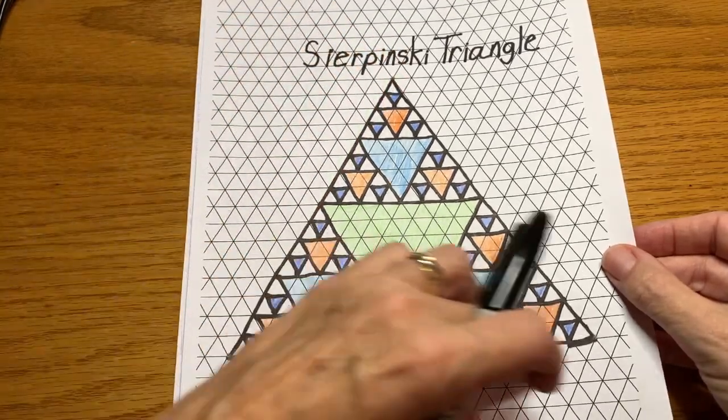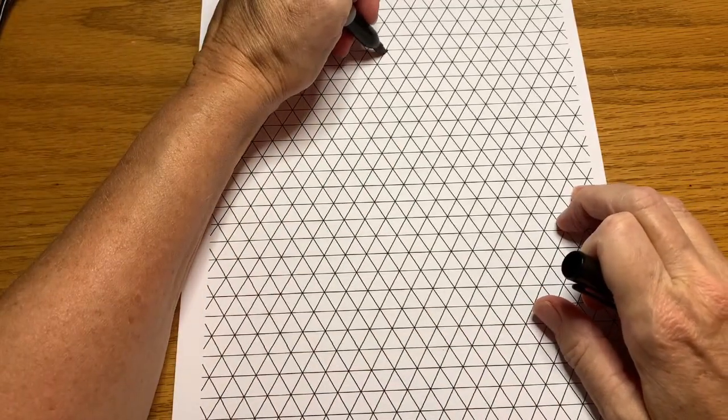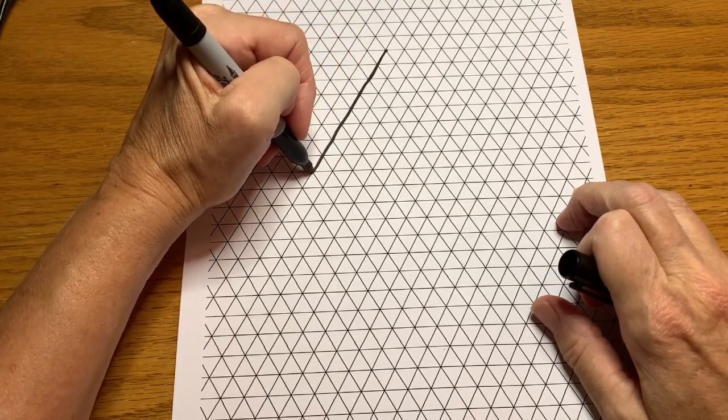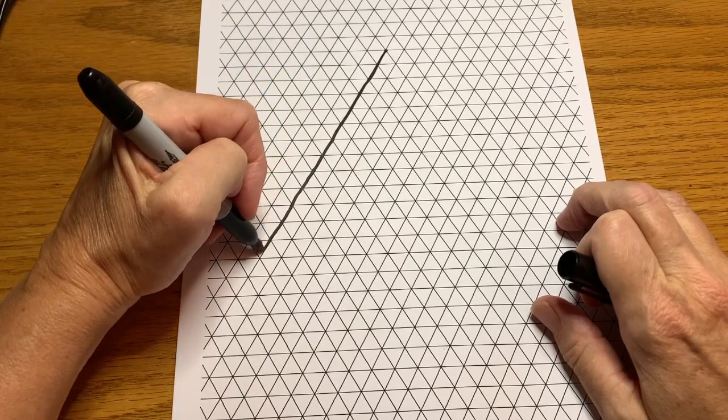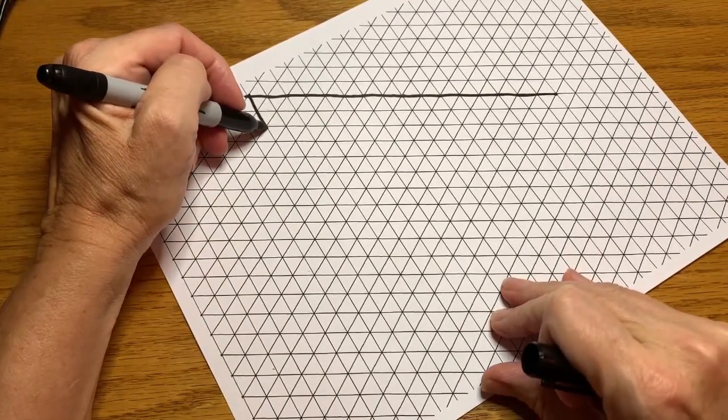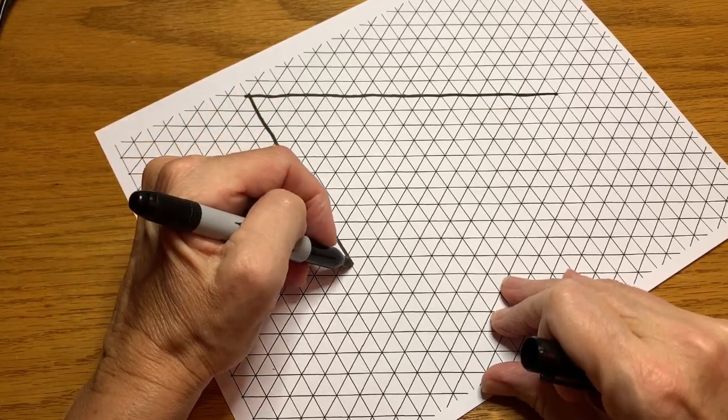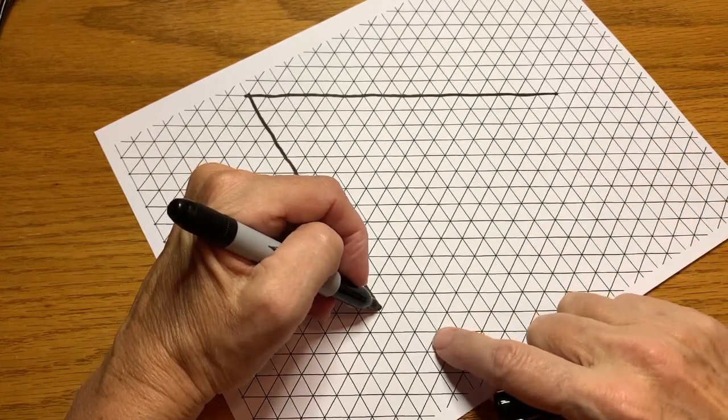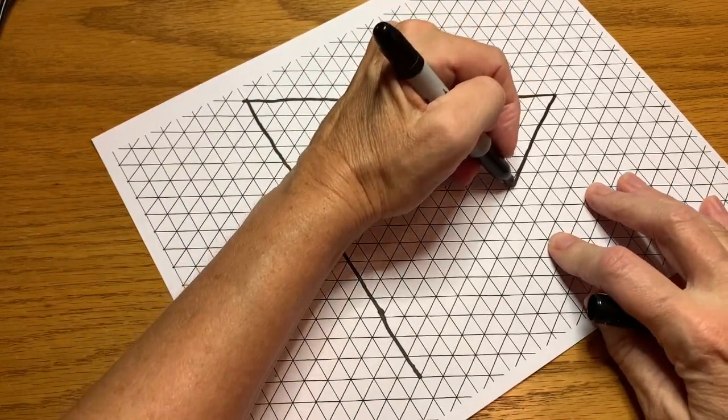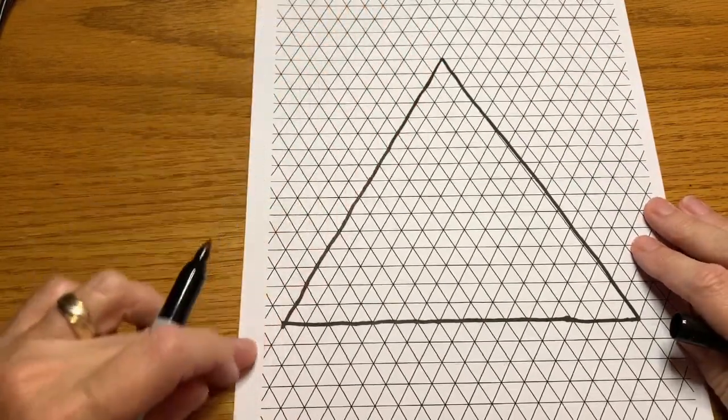I'm going to start with a triangle that has a side length of 16. So if I pick a spot that's in the middle, I can count down 1, 2, 3, 4, 5, 6, 7, 8, 9, 10, 11, 12, 13, 14, 15, 16, and then over the same. So the first triangle has a side length of 16.